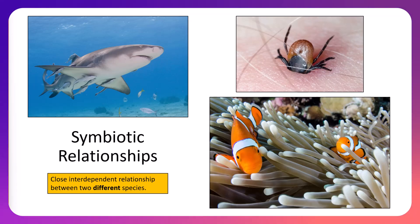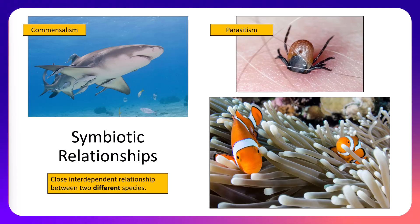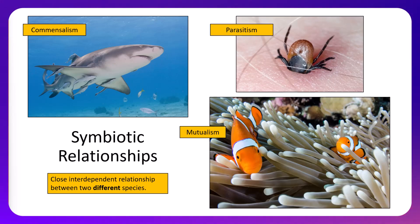The three examples of symbiotic relationships we're going to focus on are commensalism, which is an interaction where one benefits and the other is unaffected; parasitism, which is a relationship in which one organism benefits and the other one is harmed; and mutualism, in which both organisms benefit.